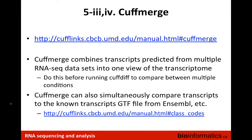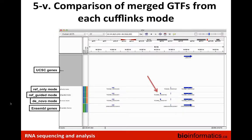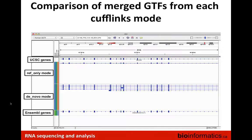Cuffmerge is a generic tool used to combine GTF files — from Stringtie or previously from Cufflinks. It does two things: merges different sets of transcript predictions into a unified superset, and allows comparison against known transcriptome models like the Ensembl GTF. We'll compare GTF files from running Stringtie in different modes by browsing in IGV, with specific regions pointed out in the online exercises to illustrate differences between modes.